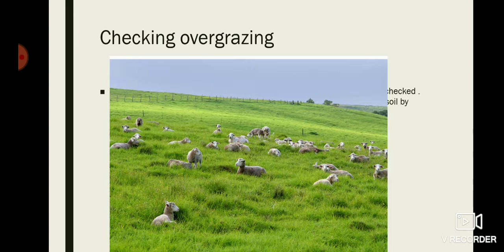The next process is preventing over-grazing. Over-grazing of grasslands by animals like goats, sheep, and cows should be checked. When such animals freely move about in the field for grazing, they spoil the soil not only by eating the weeds and grasses growing in that field, but their hooves also compact and spoil the soil, which leads to soil erosion. So over-grazing should be avoided.